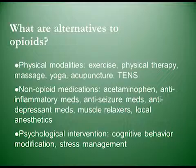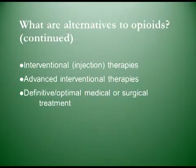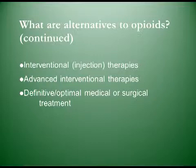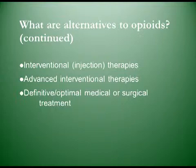Psychological intervention would include things like cognitive behavior modification and stress management. Getting more aggressive, we might consider interventional injection therapies such as spinal canal injections, nerve blocks, and joint injections — where we inject steroids and local anesthetics to numb nerves and reduce inflammation. Getting even more advanced would be spinal cord stimulation. And finally, some type of definitive surgical treatment, such as a joint replacement for a severely arthritic hip or knee. Effective medication control, such as for diabetes, might help control the disease and avoid complications like peripheral neuropathy and foot ulcers.